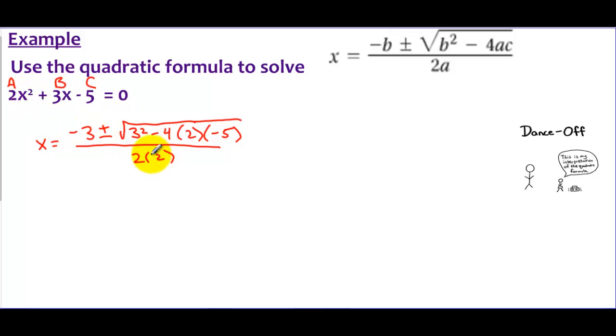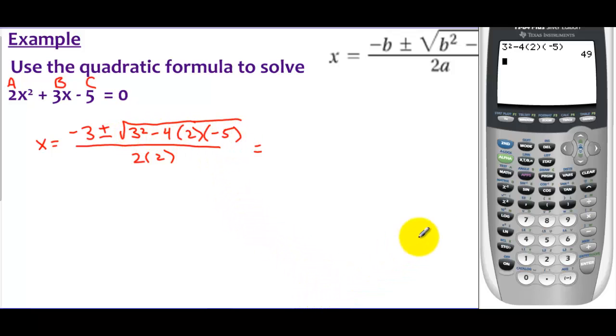That's the plug-in step. I would definitely do that step every single time until you're comfortable with this. Now what I'm going to do is take the time to simplify just underneath the radical. If I go to my calculator, I'm just going to type in 3 squared minus 4 times 2 times negative 5. Notice I didn't do the square root; I'm just making it as simple as I can—that's what B² - 4AC turns into.